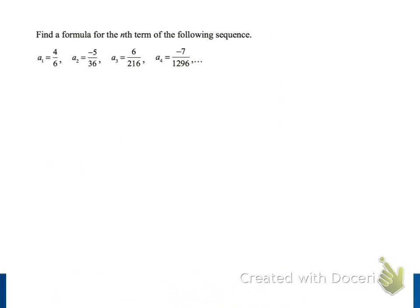Here we have the first four terms of a sequence: 4/6, -5/36, 6/216, and -7/1296. Our job is to identify a pattern in these terms so that we can write a formula that we can use to determine any other term in this sequence.